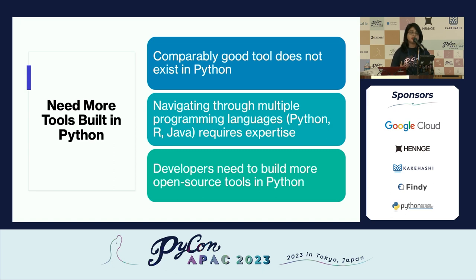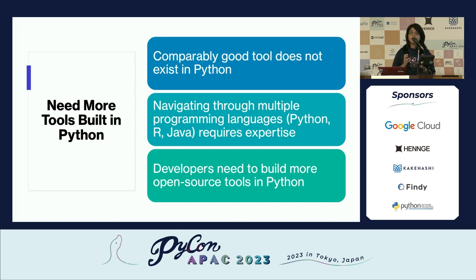The reason I say we need more Python tools is that as a life scientist, most life scientists don't have expertise in programming, so they can't navigate through multiple languages. What they do is stick to one programming language, which is R. So comparatively, there aren't equally good tools available in Python, and that's why we should develop more Python tools to deal with these problems.